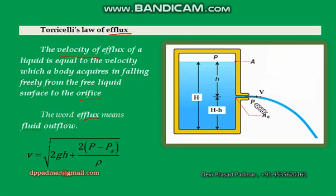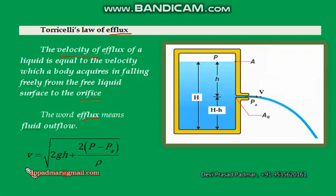To get an expression for velocity of efflux, we need to use Bernoulli's principle and the equation of continuity. Using those and rearranging for velocity of efflux, we get the expression for velocity of efflux in the case of a closed tank: V equals root of 2gh plus 2 times (P minus Pa) divided by rho, where rho is the fluid density.